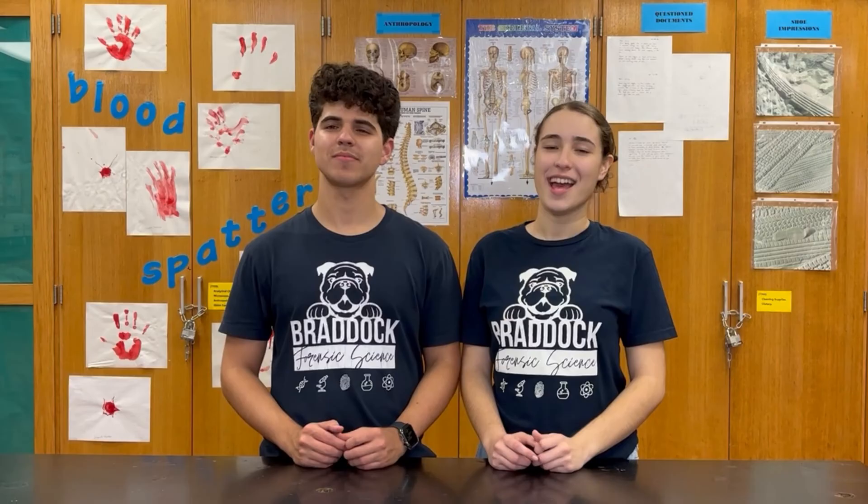The star of the show today will be ninhydrin. Ninhydrin is an organic compound that reacts to amino acids, turning them purple. This means that you can collect fingerprints on porous and non-porous surfaces using this chemical, but it is mostly used on paper, since it's a type of porous surface that is difficult to work with powders. The most common real-life scenarios in which this chemical is used is usually to find fingerprints in letters, wills, or any official documents. It helps forensic scientists determine who handled the document.